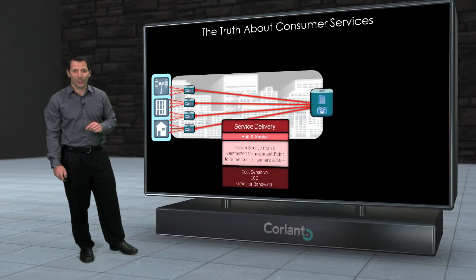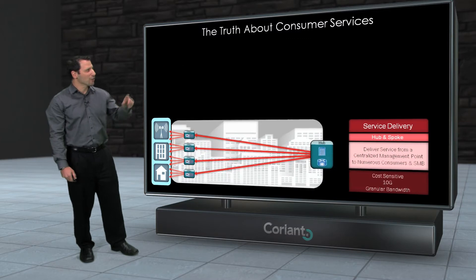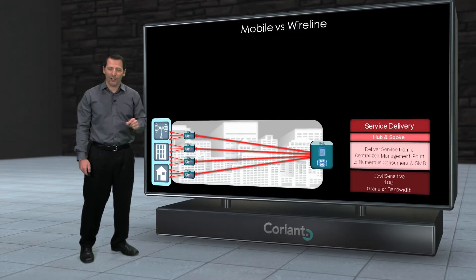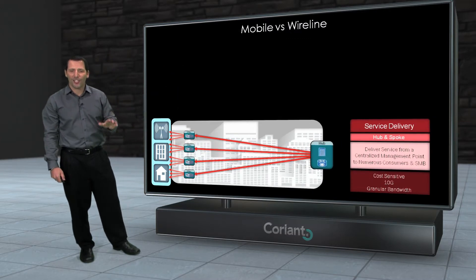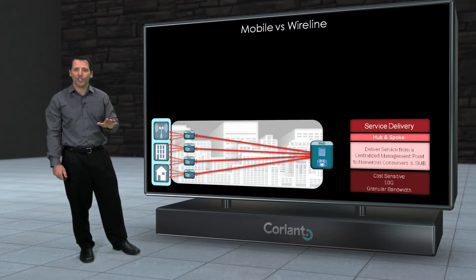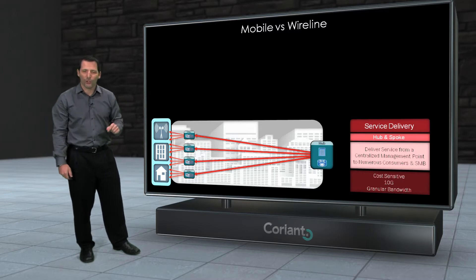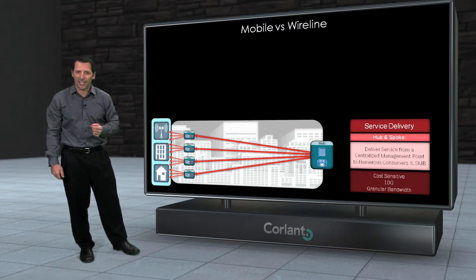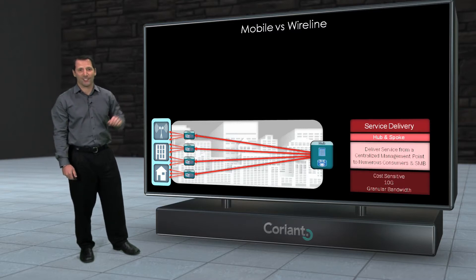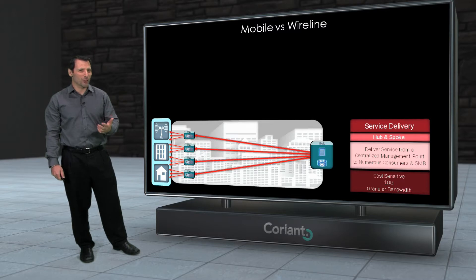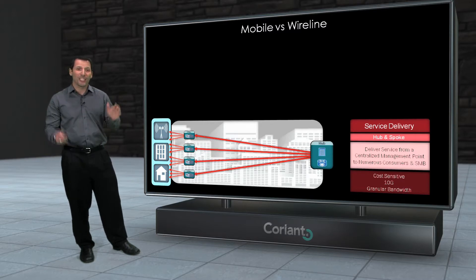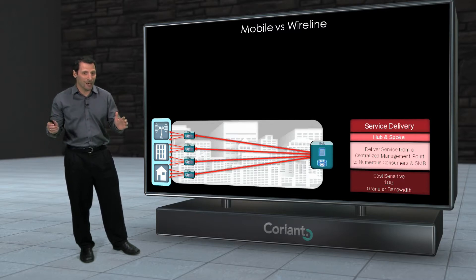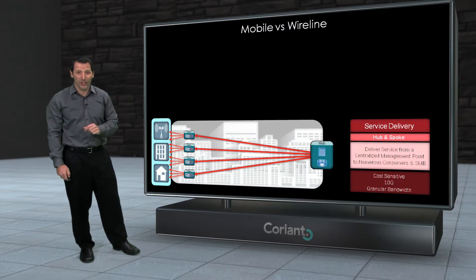The very first myth I want to look at concerns mobile traffic versus wireline traffic, and how much traffic is generated by each of these two different access methodologies. Typically, when I ask people about mobile traffic and how much of the bandwidth in the network results from mobile access infrastructures, I usually get responses of anywhere from 50 to 80%. People believe 80% of all the traffic in the network is generated by these mobile networks. Let's take a look at that to see if that's true.